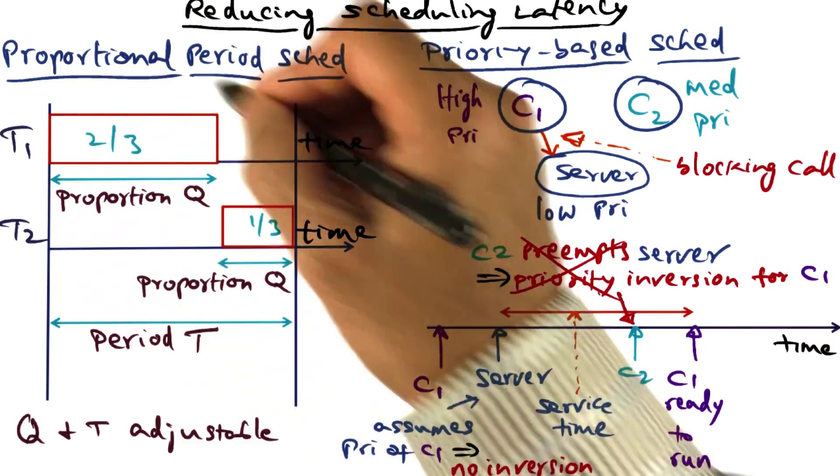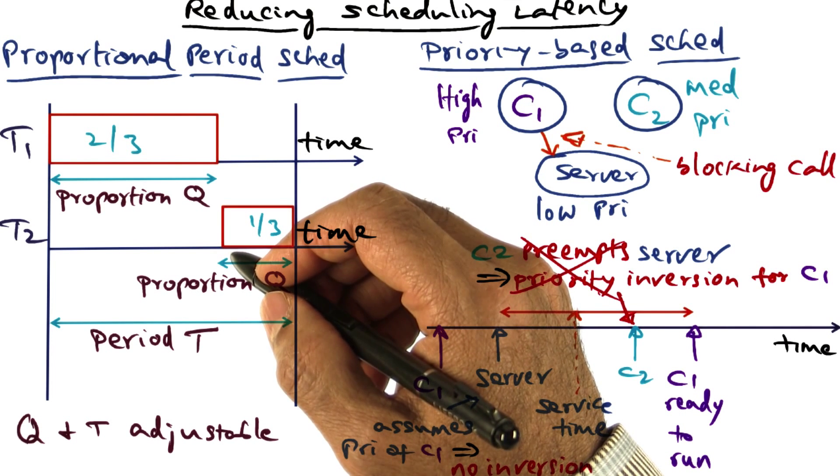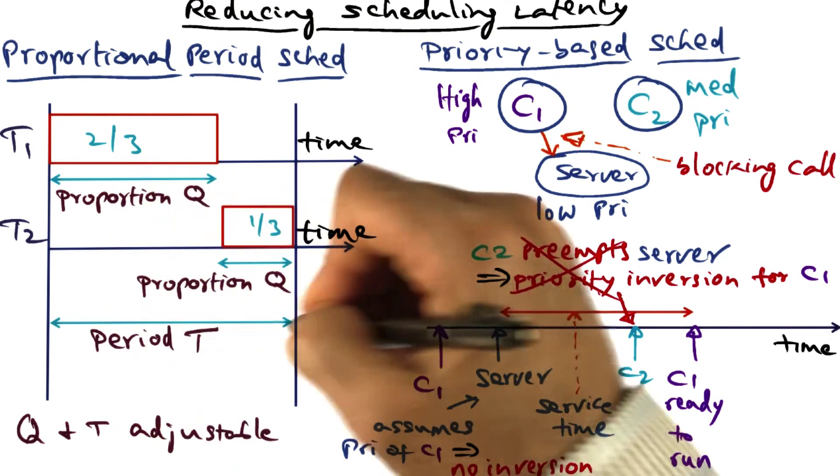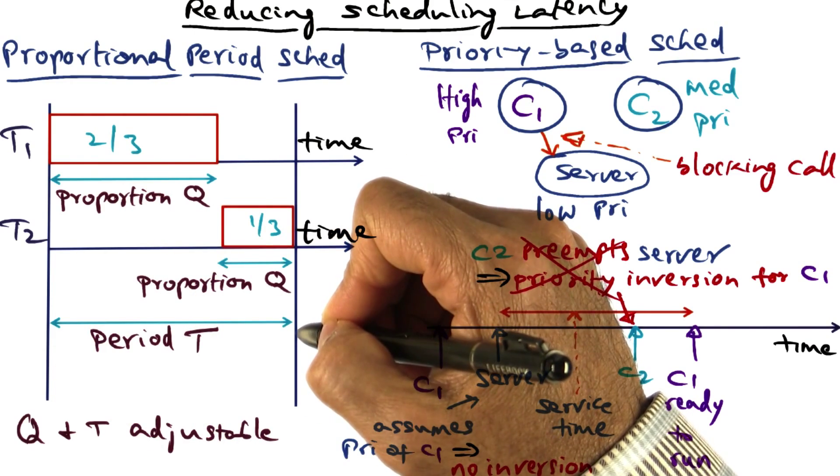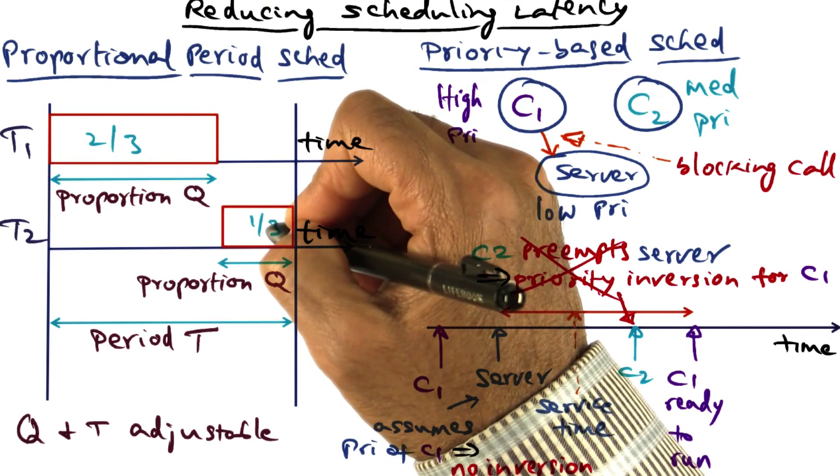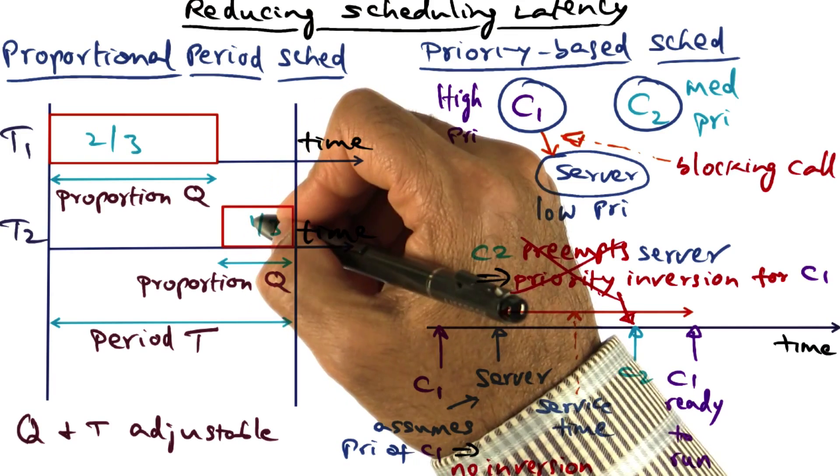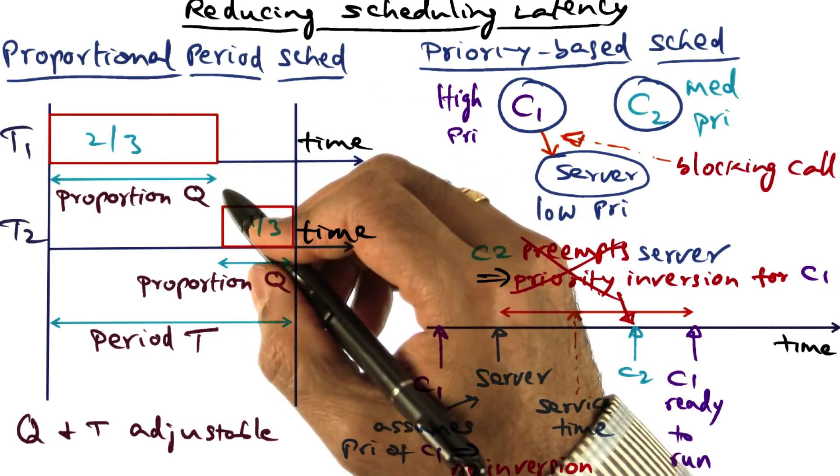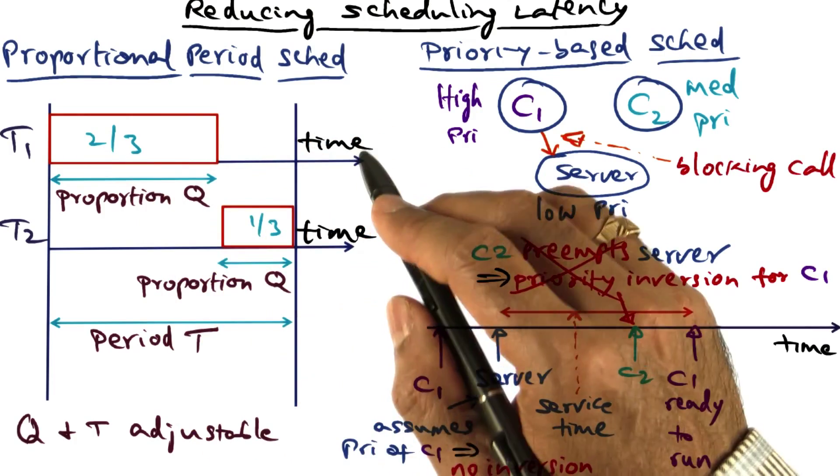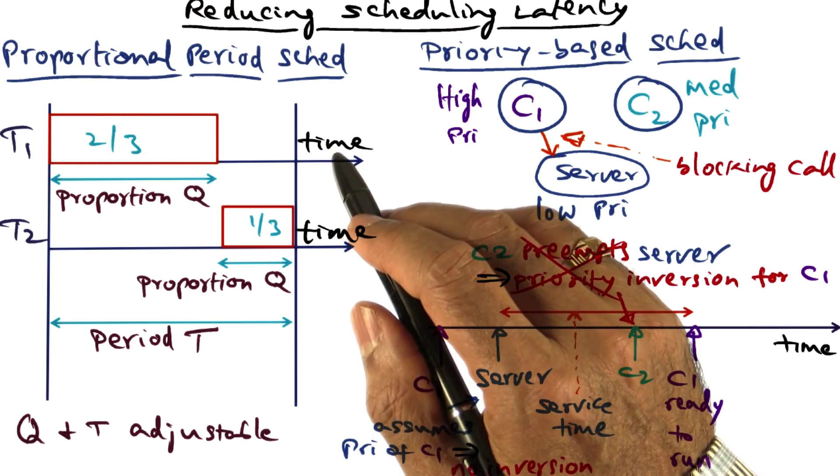The other advantage of the proportional period scheduling is that TS Linux can have control over how much of the CPU time is devoted to time-sensitive tasks so that it can reserve a portion of the time for throughput-oriented tasks. So for instance, it could say, within any period T, I'm going to reserve a third of the time for throughput-oriented tasks so that even if there are time-sensitive tasks running, throughput-oriented tasks are going to get their turns for running on the CPU. And that way, we can make sure that while supporting the timeliness of time-sensitive tasks, TS Linux can also ensure that throughput-oriented tasks are able to make forward progress.